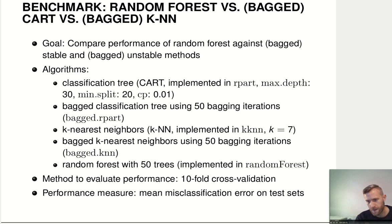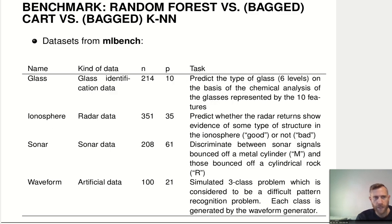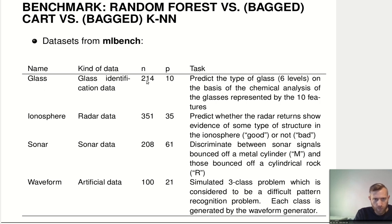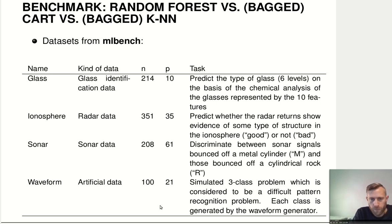We get ten estimates of the misclassification rate for every dataset. The datasets used are classical benchmarking datasets from the MLBench package: the glass dataset with 214 observations and ten features, the ionosphere dataset with 351 observations and 35 features, the sonar dataset, and the waveform dataset. Some of these are multi-class problems — glass has six levels — some are binary, and waveform is a three-class problem.